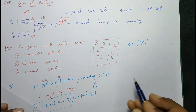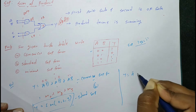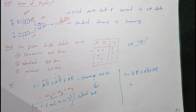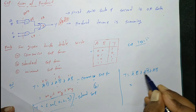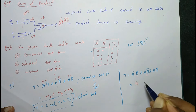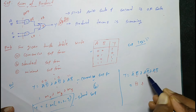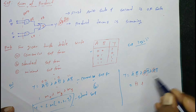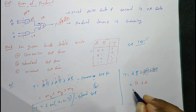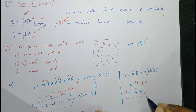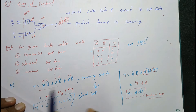The final one is the minimal SOP form. y equals to ĀB̄ plus AB̄ plus AB. Here, B̄ is common in ĀB̄ and AB̄, giving B̄(Ā + A), and A is common in AB̄ and AB, giving A(B̄ + B). So the minimal SOP is y equals to A plus B̄.